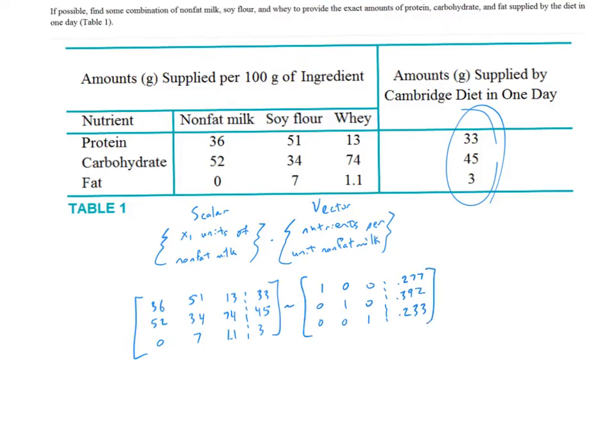This one does reduce to the identity on the left and on the right-hand side, decimal 0.277, decimal 0.392, and 0.233. Our solution is that the diet requires 0.277 units of nonfat milk, 0.392 units of soy flour, 0.233 units of whey. And those are the ratios that will give us the desired protein, carbs, and fat that we want in our diet.